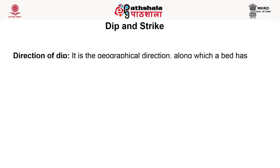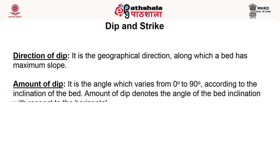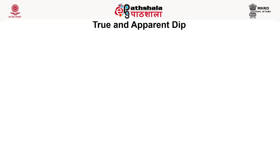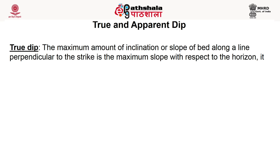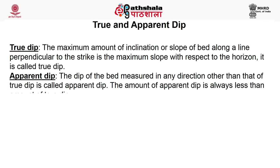The direction of dip and strike of any inclined or tilted bed must lie at right angle to each other. This figure shows true and apparent dip. True dip is the maximum amount of inclination or slope of a bed along a line perpendicular to the strike, in the maximum slope with respect to the horizontal. Apparent dip is the dip of the bed measured at any direction other than the true dip. The amount of apparent dip is always less than true dip.